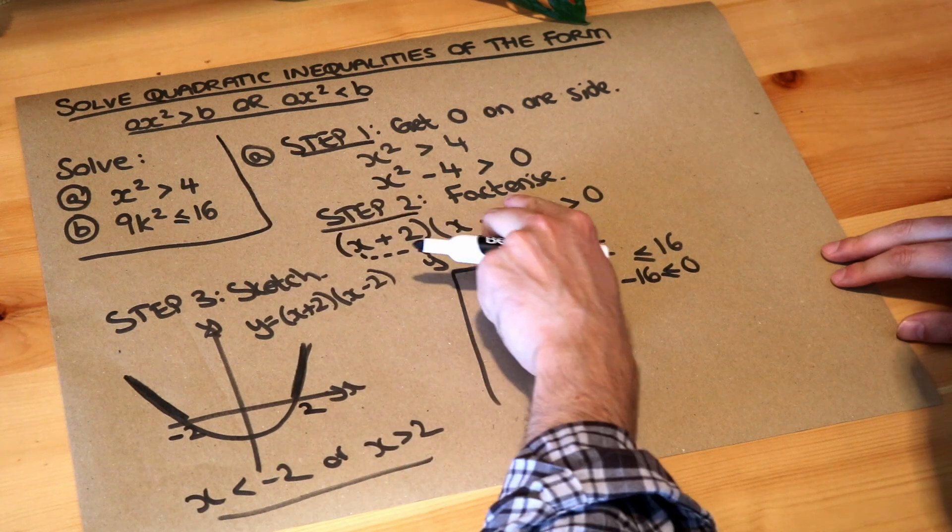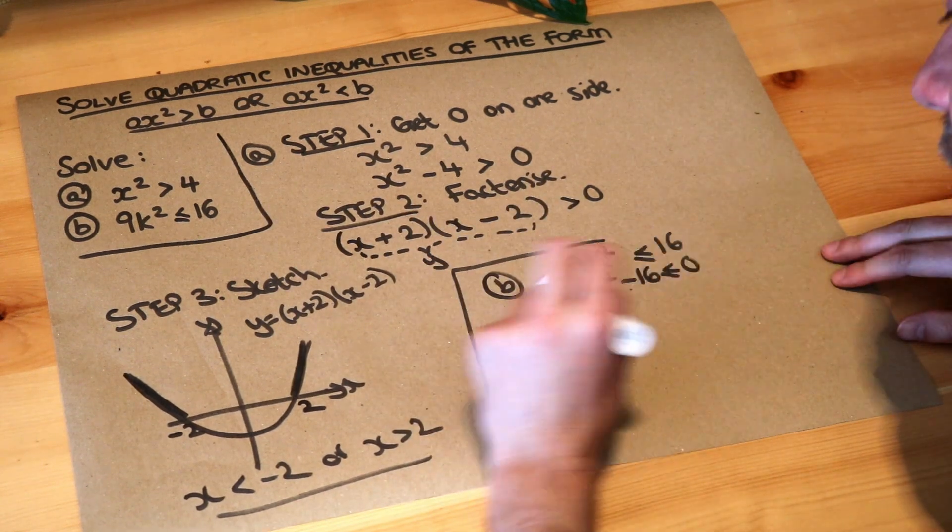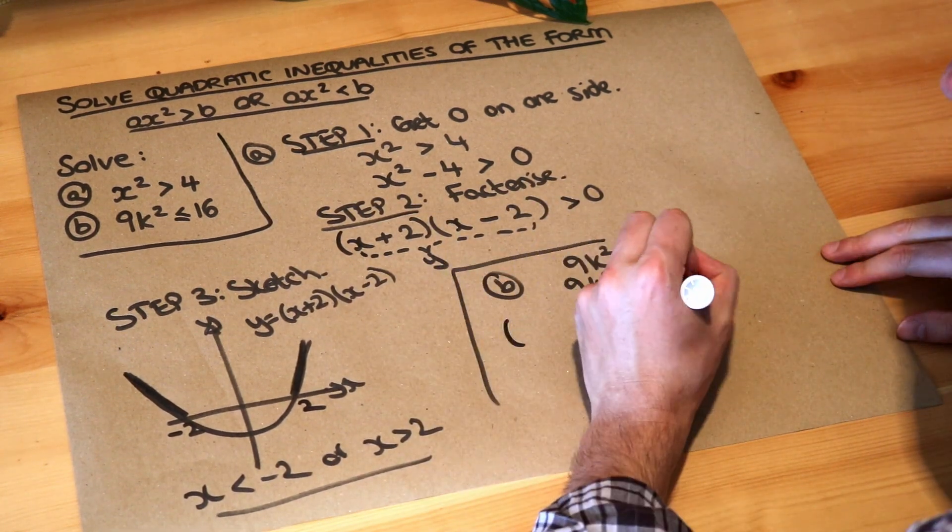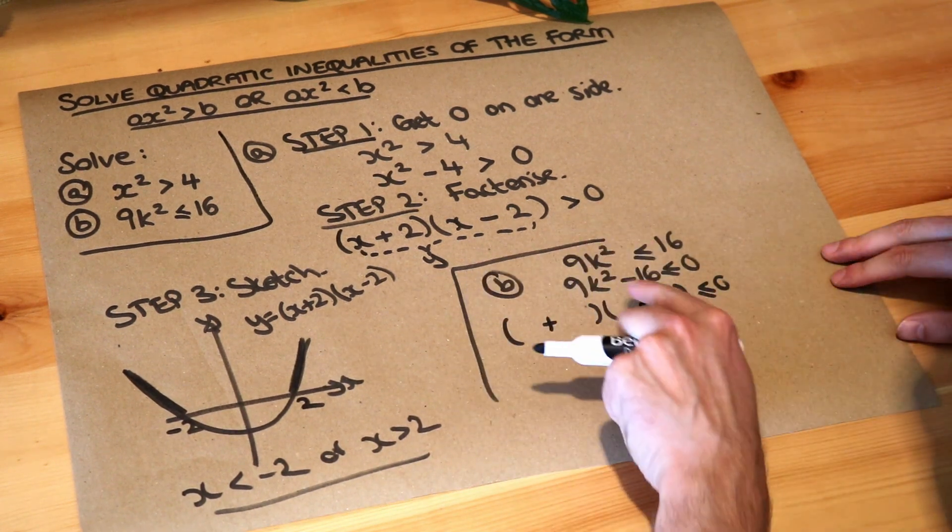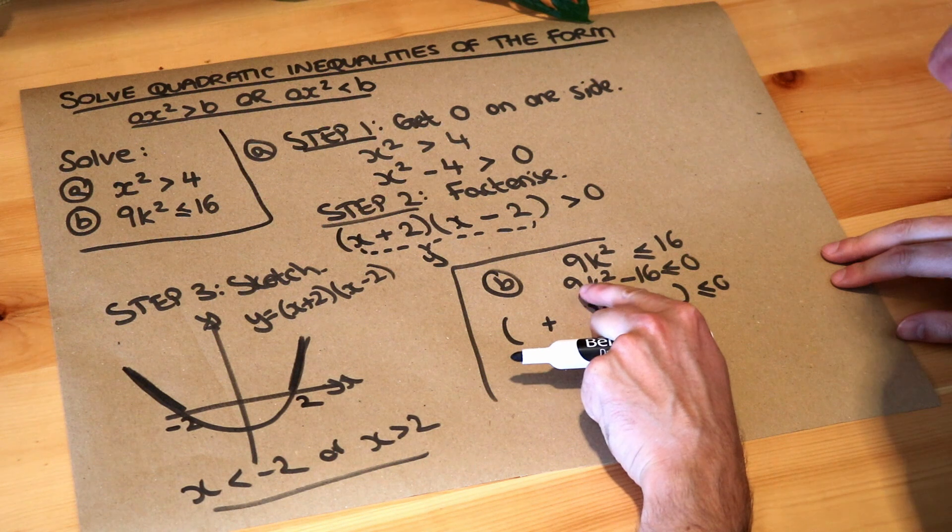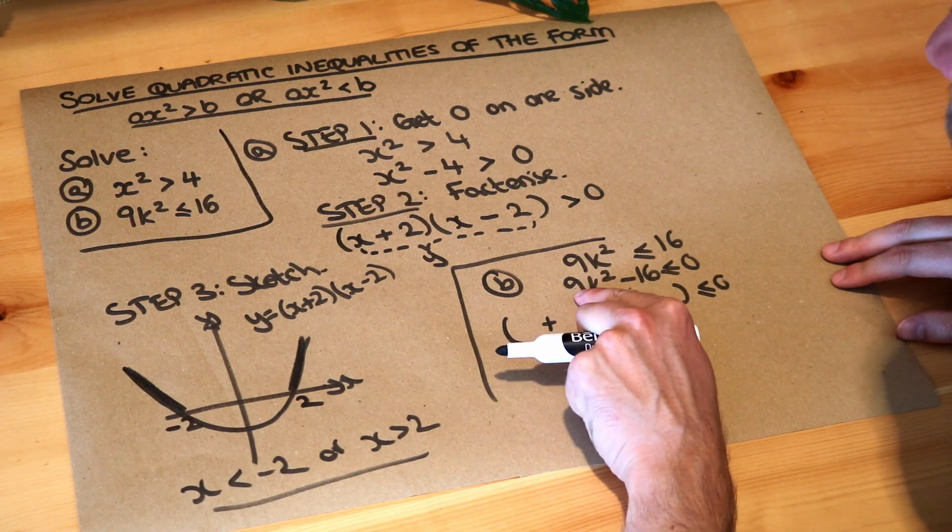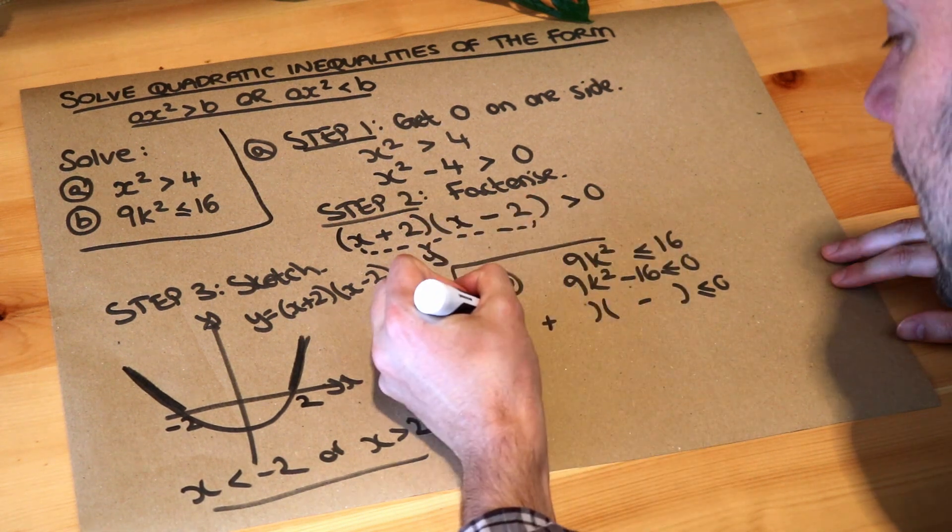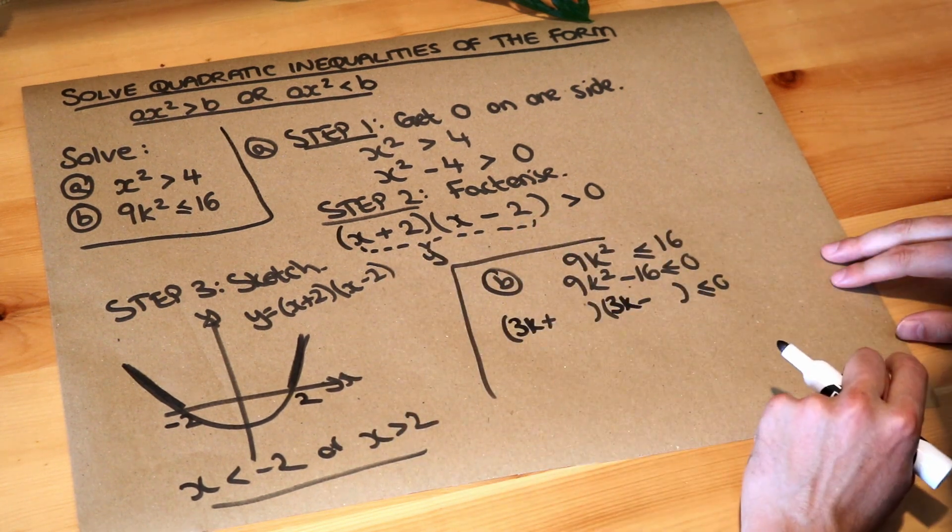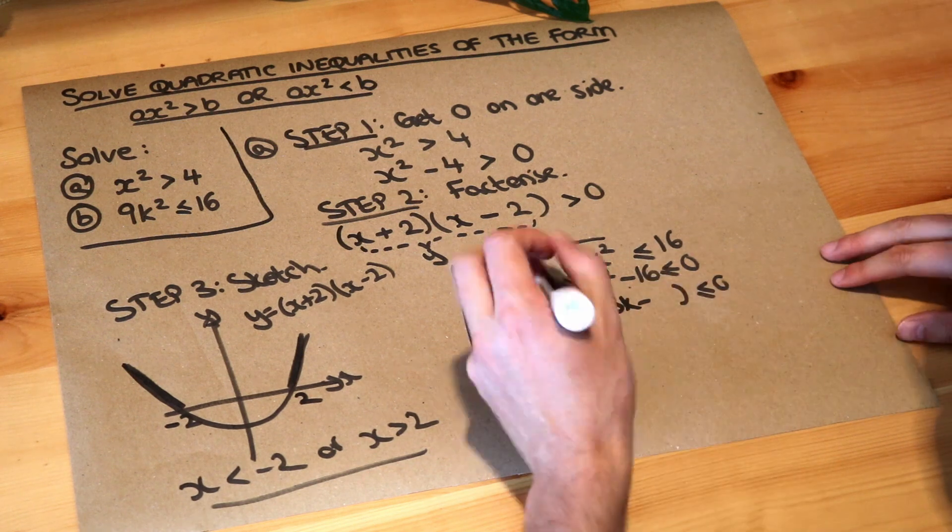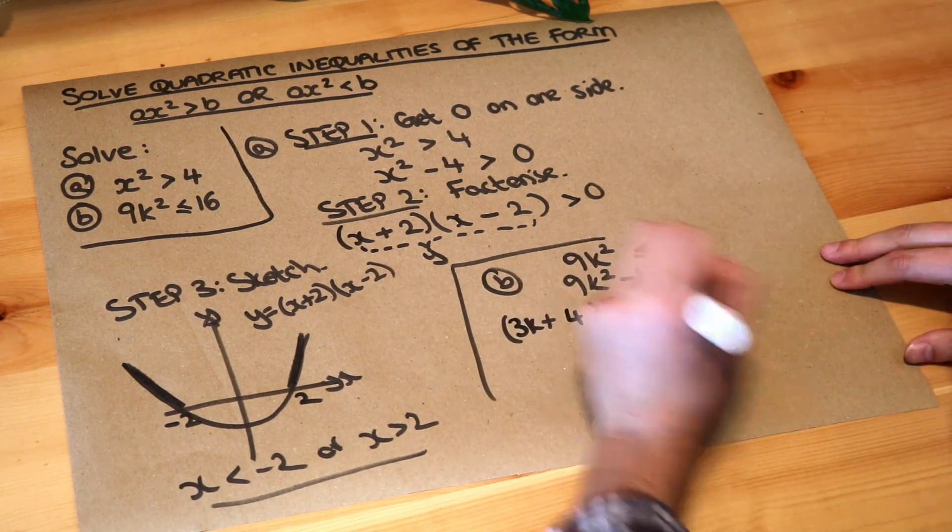Then step 2 is to factorize. So it's still the difference of two squares. One then plus, one then minus. What's the square root of the first thing? The square root of 9k squared—well, the square root of 9 is 3, the square root of k squared is k, so it's 3k, because 3k multiplied by 3k would give you 9k squared. And what's the square root of 16? It's 4. So that's the second thing of each bracket.